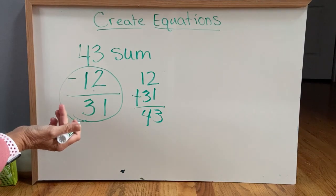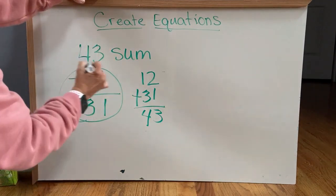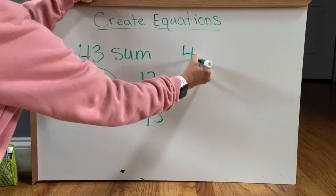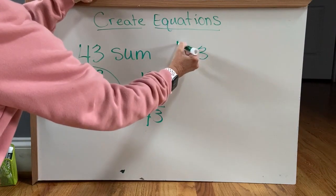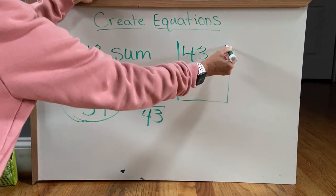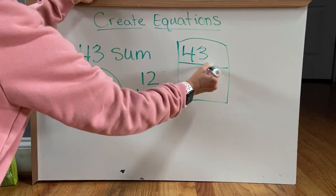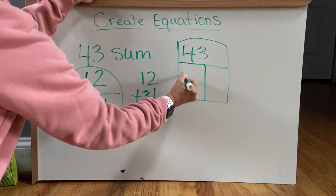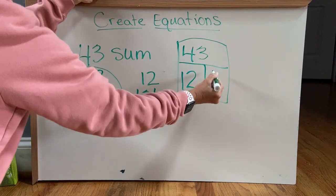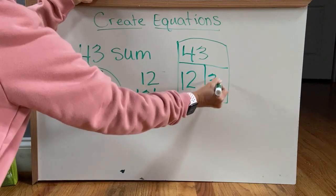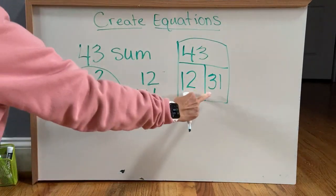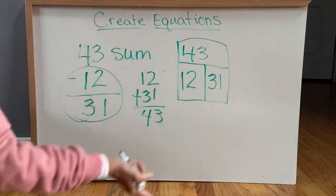It's just like doing a fact family. This is our family, so 43 is our big number that we put at the top. And then our two numbers that we put in the family are 12 and 31. And these two numbers can change however you want.